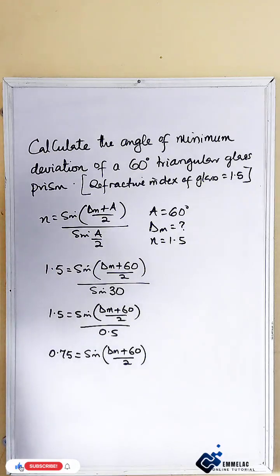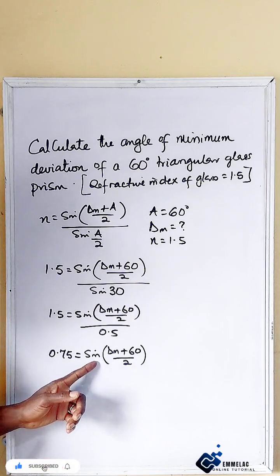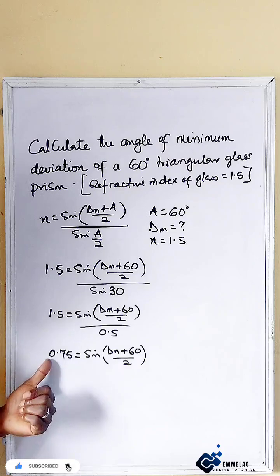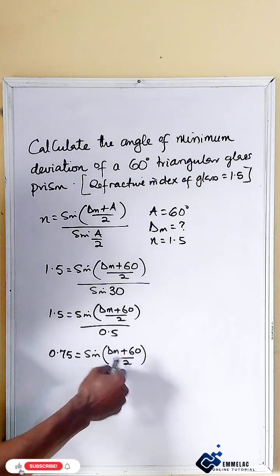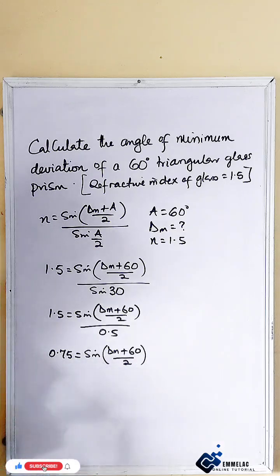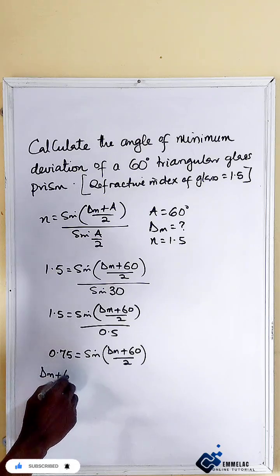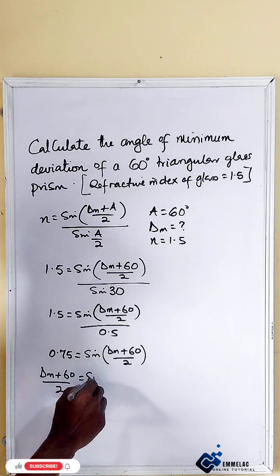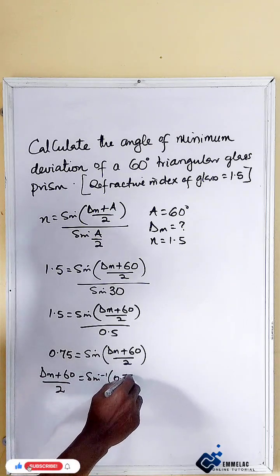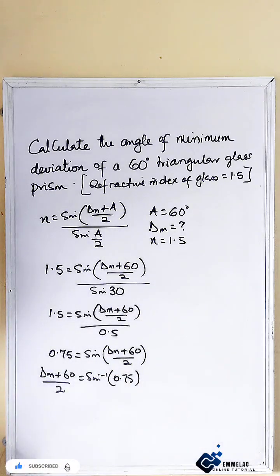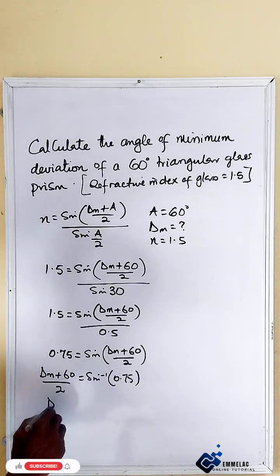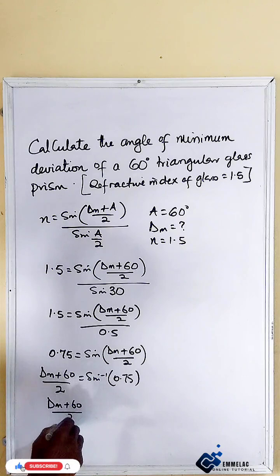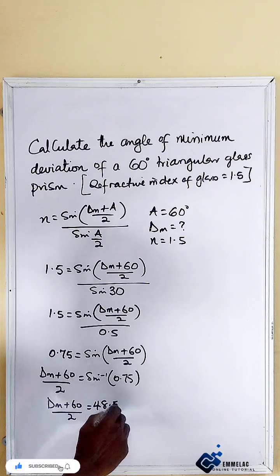Now to find dm, we take the inverse sine of 0.75. Please don't make the mistake of cross-multiplying further, because the whole bracketed expression is a single term. Taking sine inverse of 0.75 gives us 48.59 degrees.